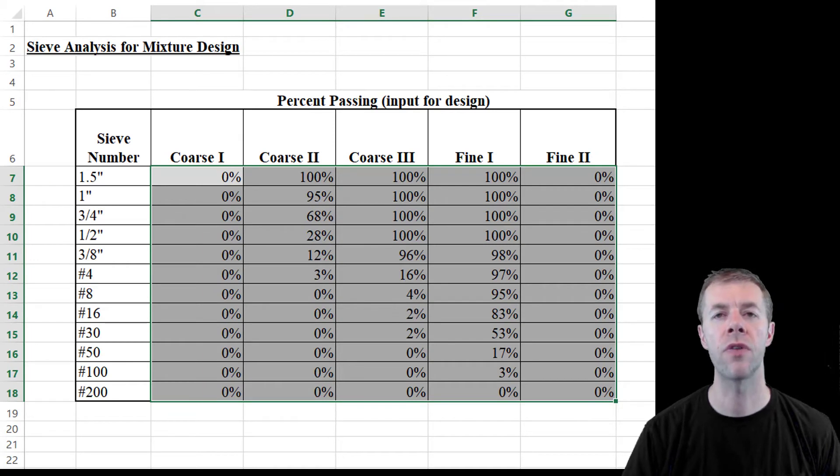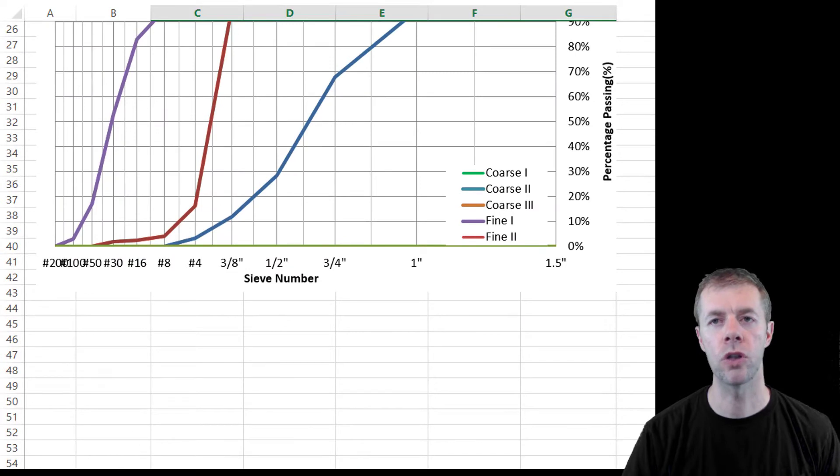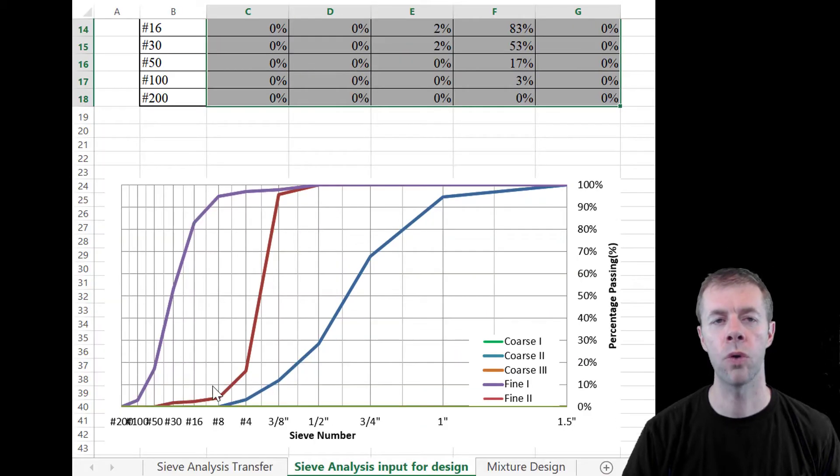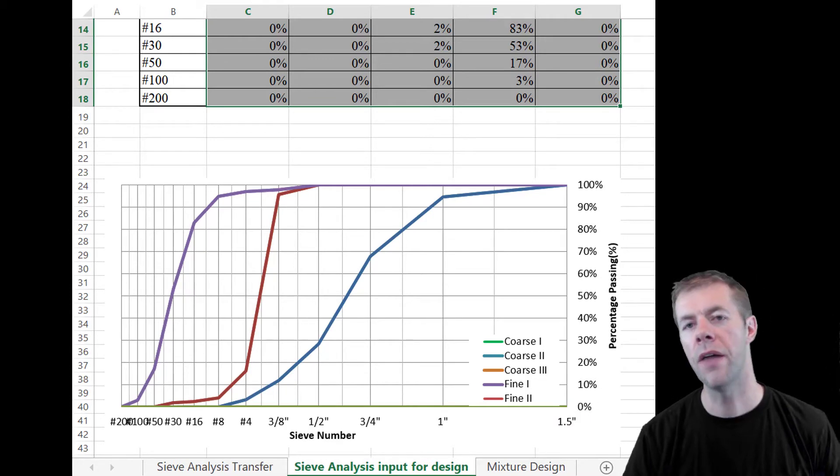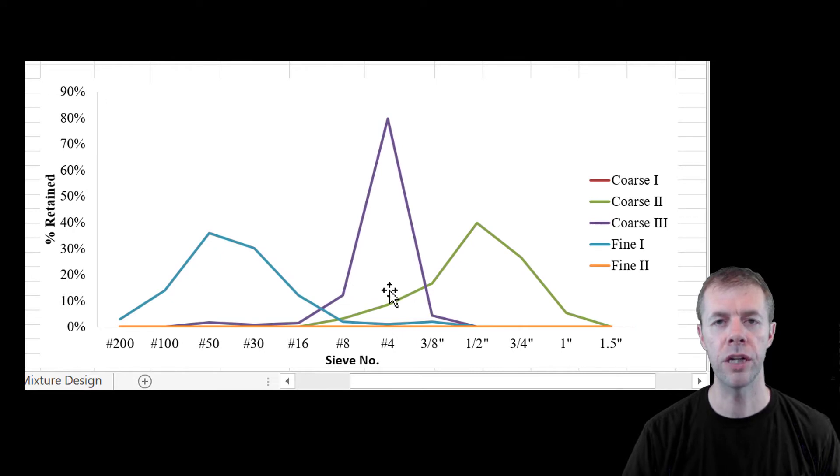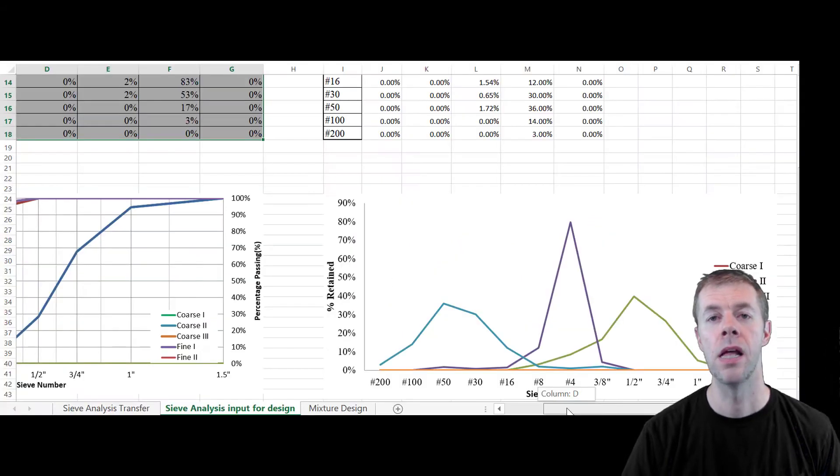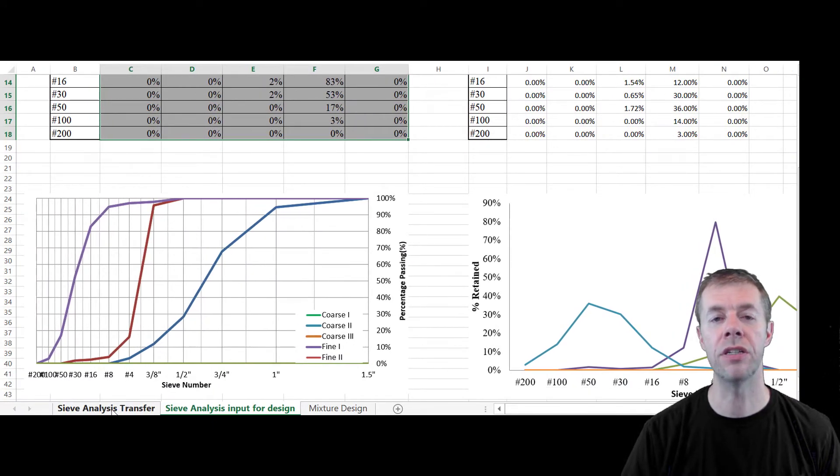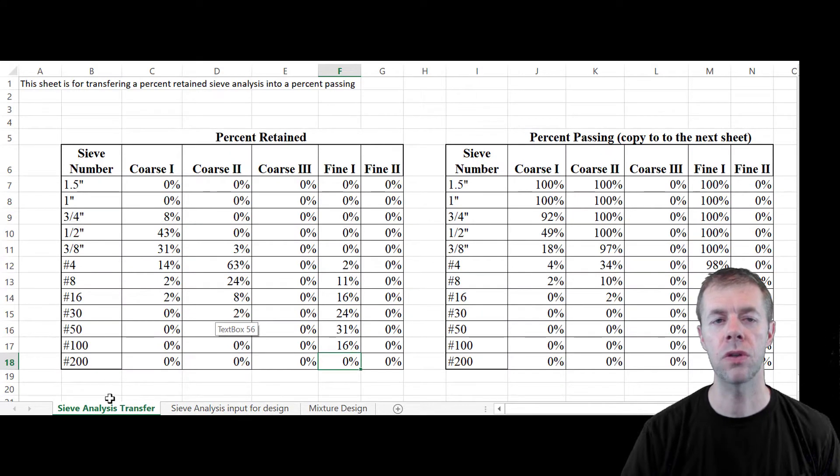On this other tab, this is the sieve analysis for the actual design. So percent passing is what the spreadsheet uses to determine what the gradation is. It's going to calculate a percent retained, and this is for information only. There are some helpful charts down here. This is a typical percent passing plot. And this is a typical percent retained chart. This percent retained chart is going to be really helpful. I'll explain it more in just a second. Now, there are some times that you're not given aggregates in a percent passing. This helps you if you've given a percent retained, this will actually help you calculate a percent passing. So you can copy it and put it in the previous worksheet. We're going to do that on this problem.